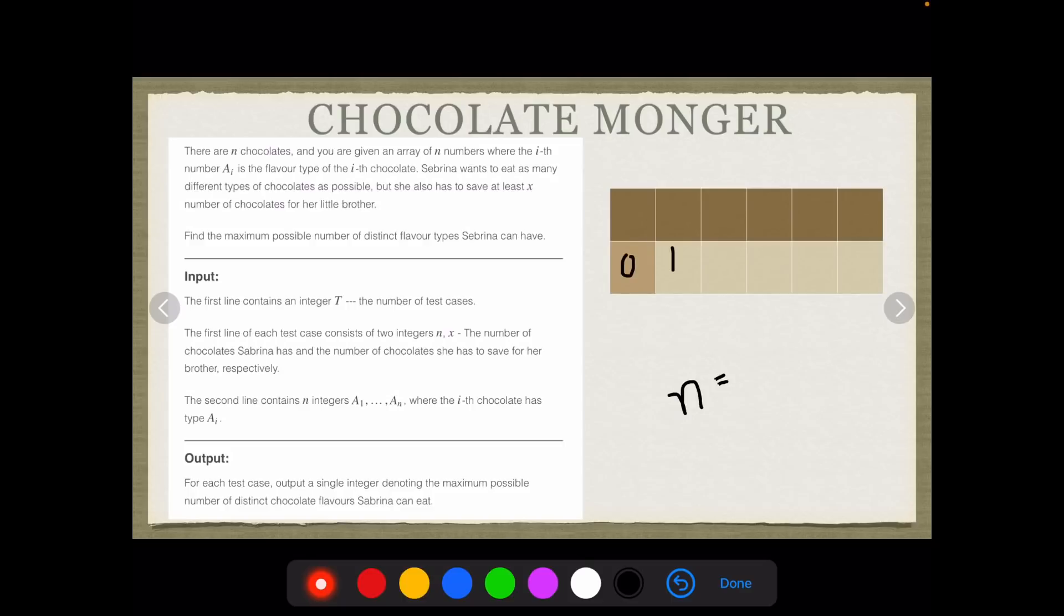N is the number of chocolates. Let me just say 0, 1, 2, 3, 4, and 5. For this example, let N equal 6. And you will be given an X. Now what is X? X is the amount of chocolates that Sabrina has to save for her little brother. Each of these elements A_i would contain a chocolate type. What do I mean by a chocolate type? Suppose I have a 10, and 10 represents a particular flavor of chocolate. I can have another 10 also. I can have a 20 which represents a different